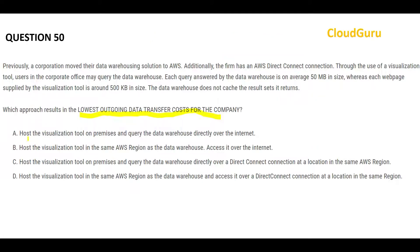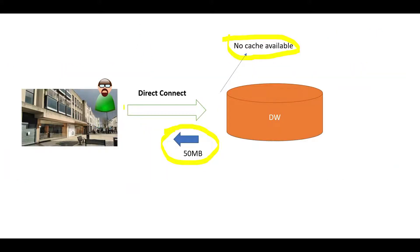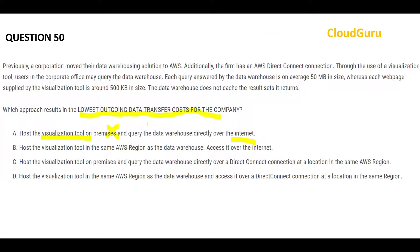Option A says host the Wiz tool on-premises and query the data warehouse over the internet. As explained, this is expensive because it attracts outgoing charges. Option B says put the Wiz tool in the same AWS region, but access it over the internet — the same region part is good, but accessing over the internet is not ideal. There has to be a better option.